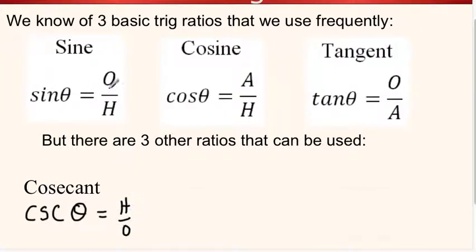So we've got sine of the angle being opposite over hypotenuse. The cosecant of an angle is hypotenuse over the opposite. That's the first of the new ones.